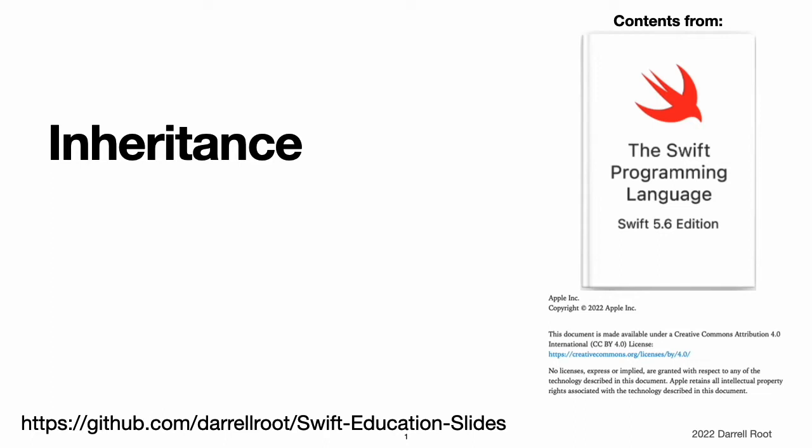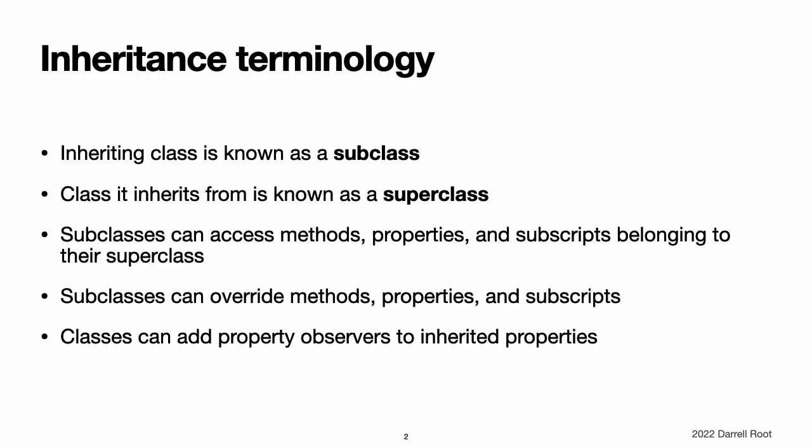Inheritance. A class can inherit methods, properties, and other characteristics from another class. When one class inherits from another, the inheriting class is known as a subclass, and the class it inherits from is known as its superclass. Inheritance is a fundamental behavior that differentiates classes from other types in Swift.